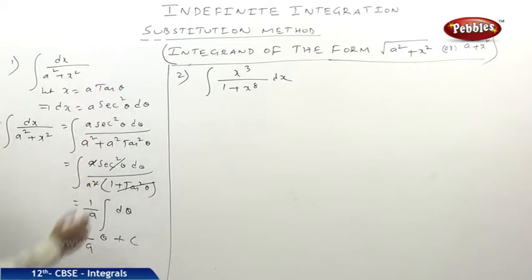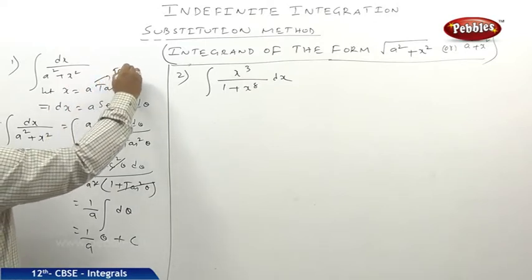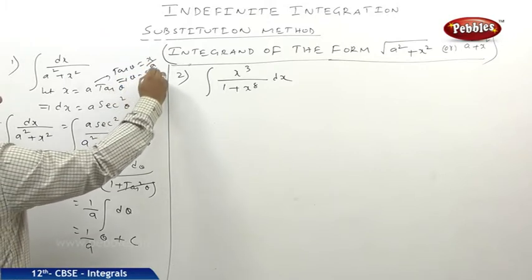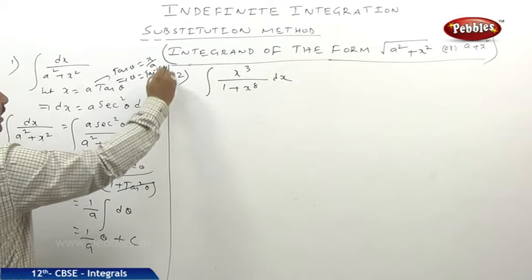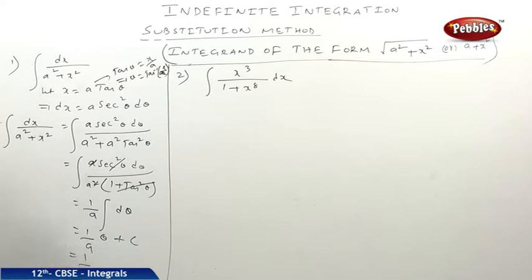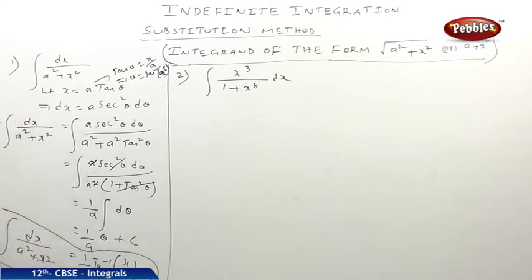Since x equals a tan θ, we have tan θ equals x/a, therefore θ equals tan⁻¹(x/a). So the result is (1/a) tan⁻¹(x/a) plus c. This should be remembered as a formula: the integral of dx by (a² plus x²) equals (1/a) tan⁻¹(x/a) plus c.